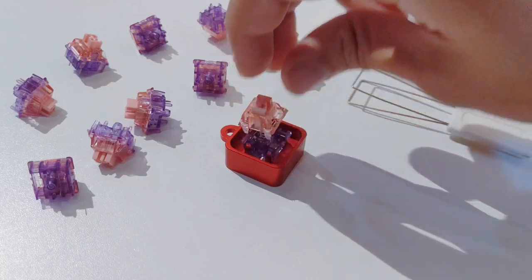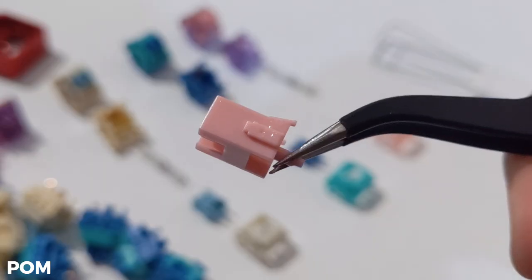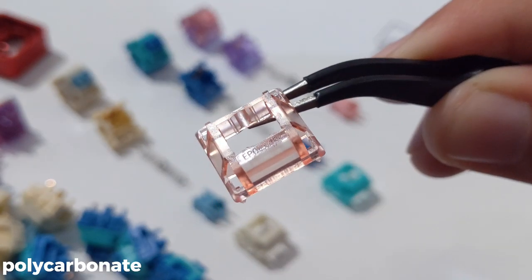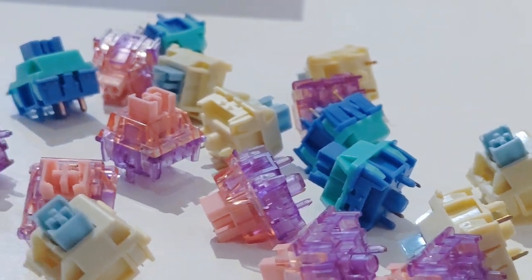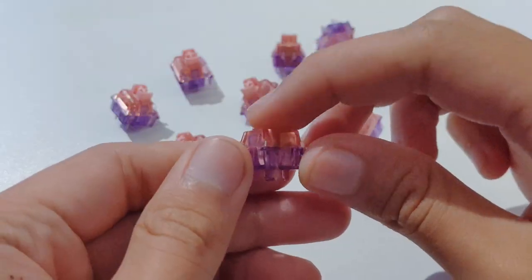The last I have is the EpoMaker Flamingo, a linear switch with a pink POM stem and pretty pink and purple PC housings. This is a linear switch that basically has the same specs as the Bluebird, just with a longer pre-travel. Let's hear the sound test.